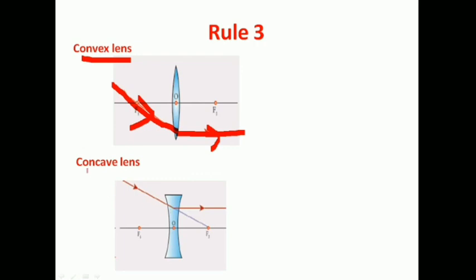In the case of a concave lens, a ray of light which seems to be passing toward the principal focus, when it is incident on the concave lens, it will pass parallel to the principal axis after refraction. This is the third rule. In the case of both concave and convex lenses, these three rules are very important because we draw the ray diagram based on these three rules.